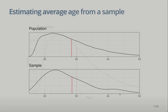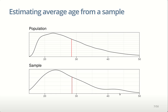We take a sample, and depending on how big it is, it should look something like the population. Here's one sample of size about 50 — a reasonably large sample. You can see it looks quite a bit like the population, with a bit of variation. We can compute the average age in that sample, and it looks pretty much like the population age — a little bit shifted to the right, but about the same.